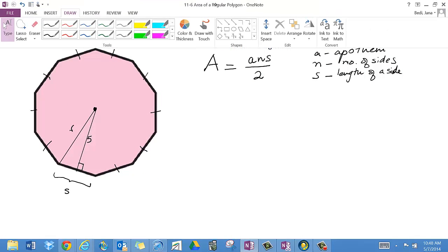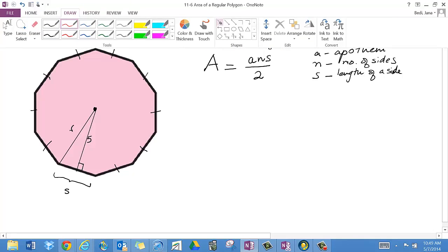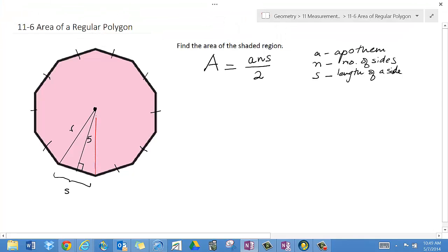And let me go ahead and draw another radius. So we have two radii, which means we have an isosceles triangle here.